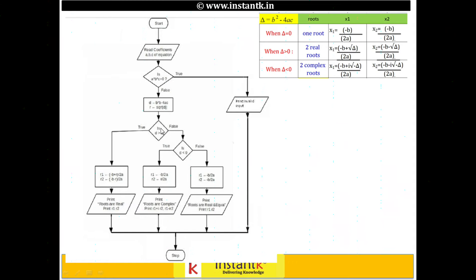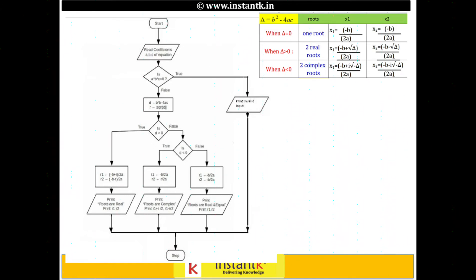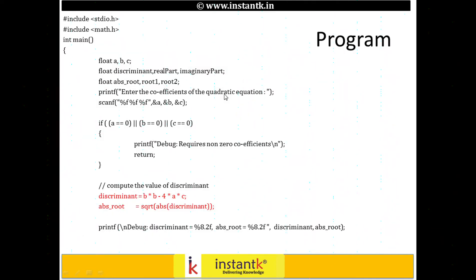It's simple: if D is greater than zero, you go into one condition; if D is less than zero or equal to zero, another. You initialize R1 and R2, print them, and exit. This is the simple flowchart of the whole thing.